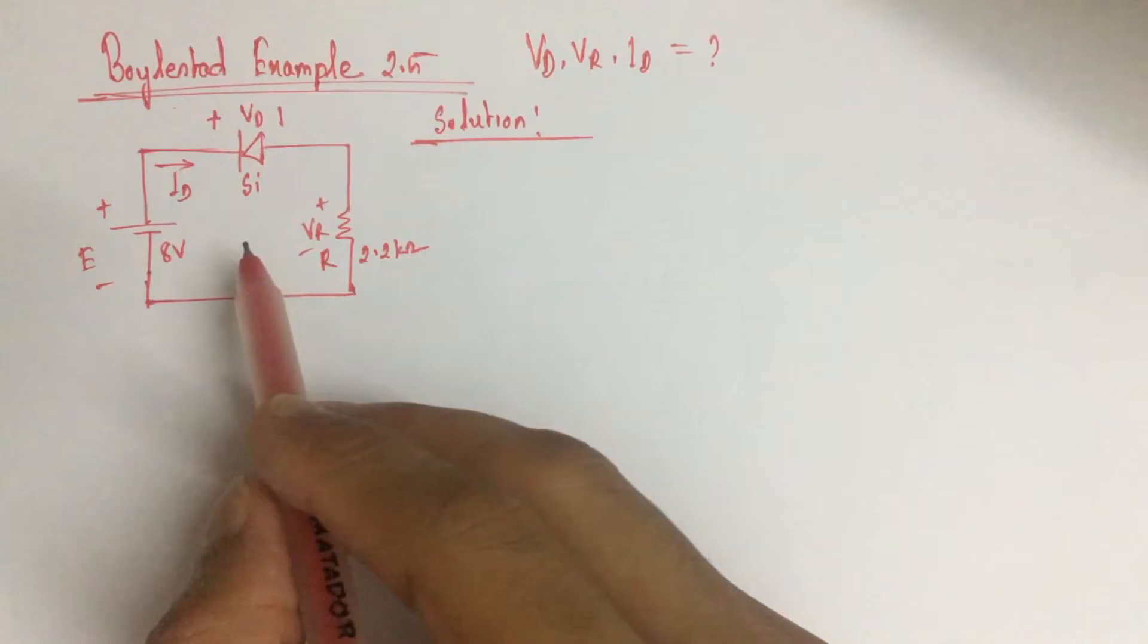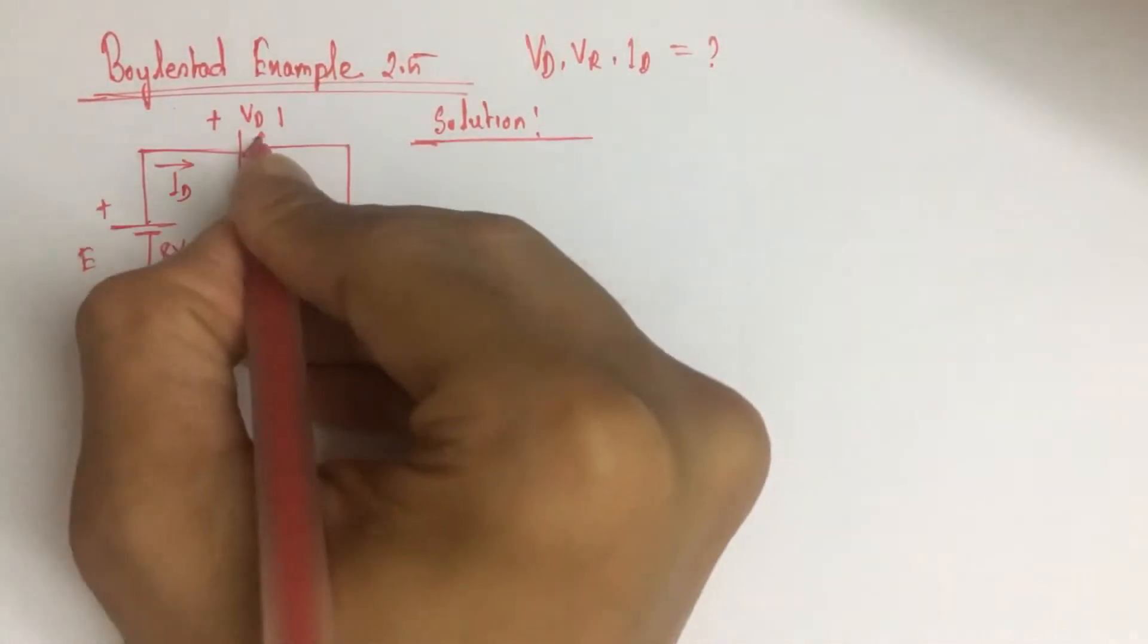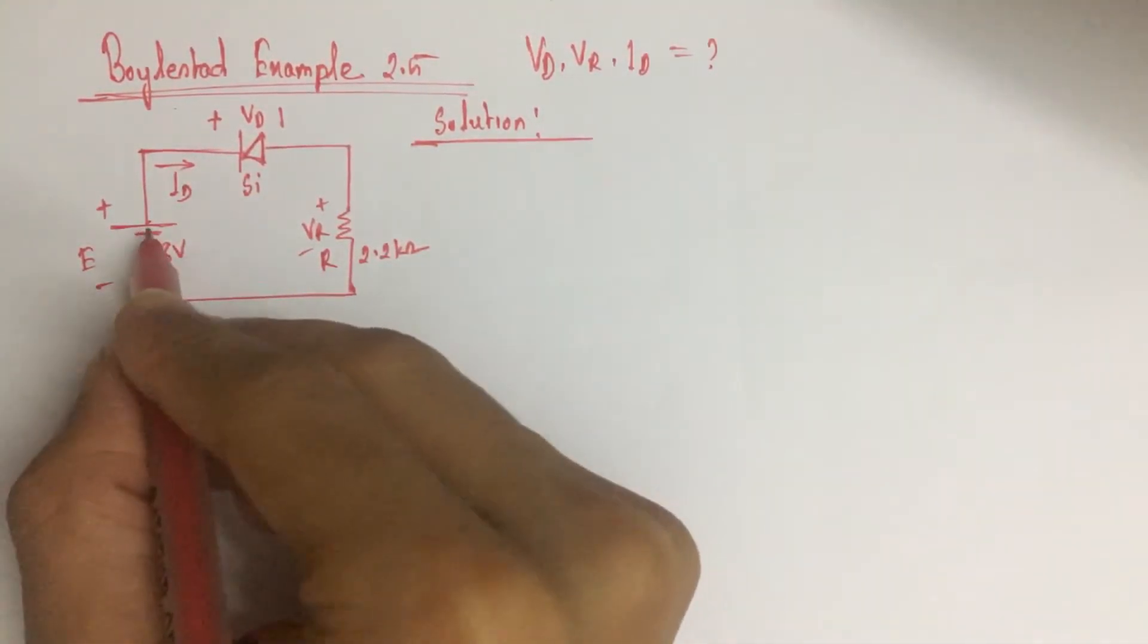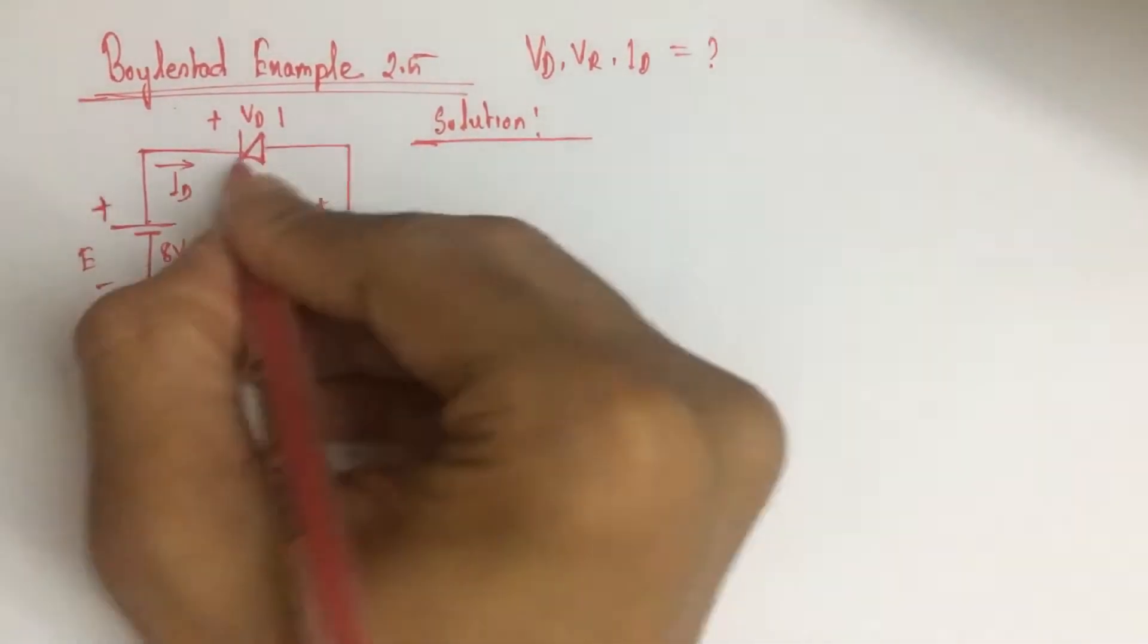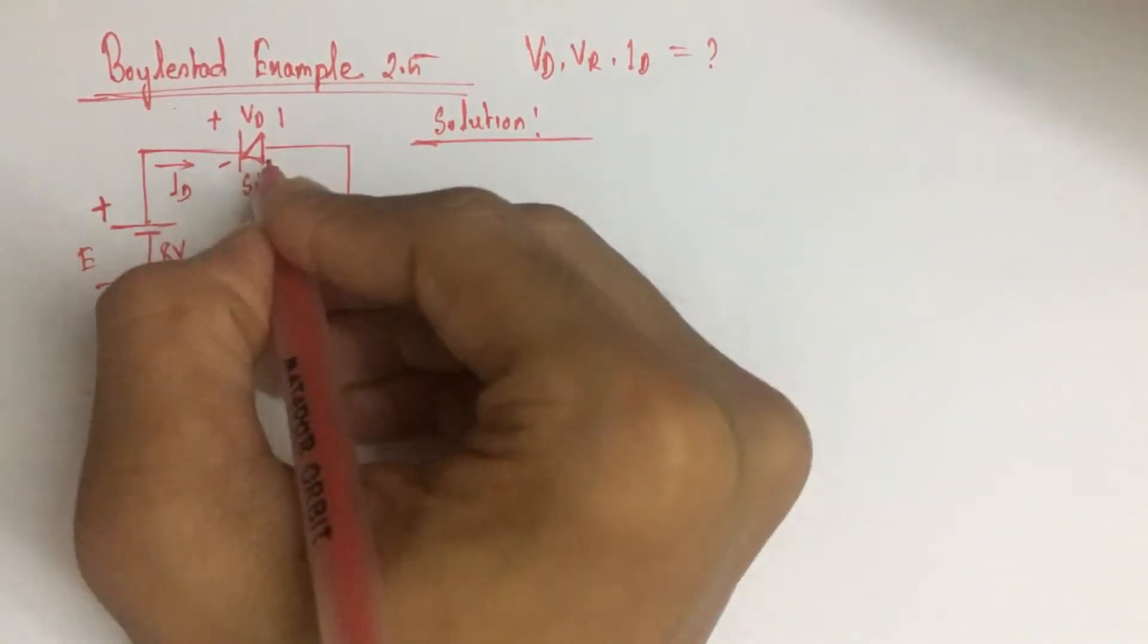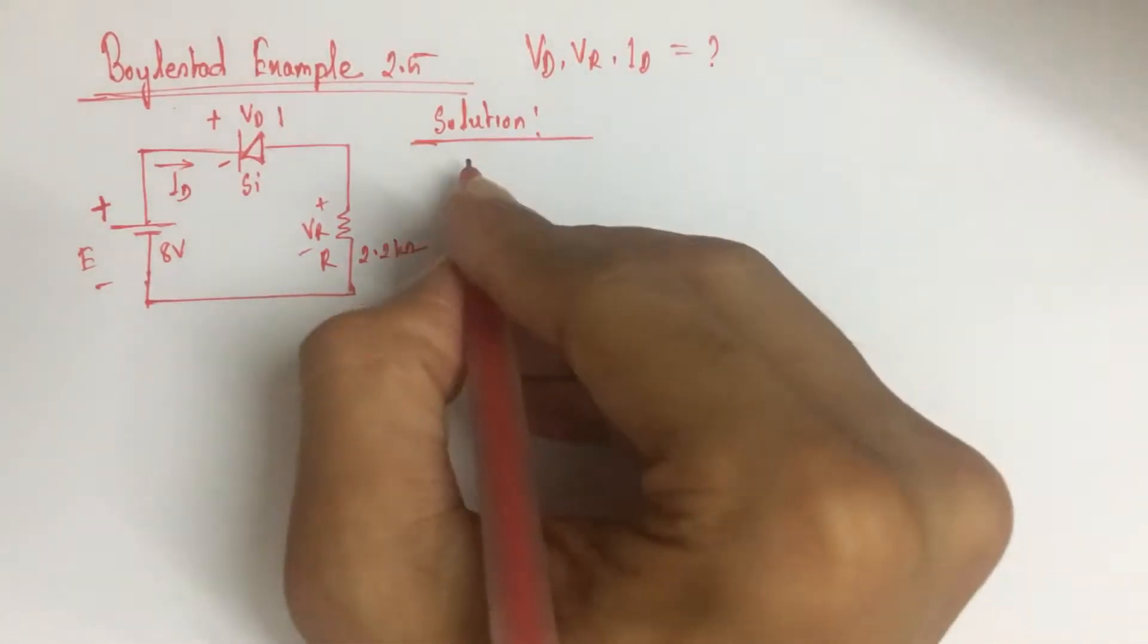From the circuit we see that the biasing voltage is 8 volt and it's a silicon diode. Now this is the positive end and this is the negative end of the diode. So the diode is reverse biased. Since the diode is reverse biased, the diode is off.